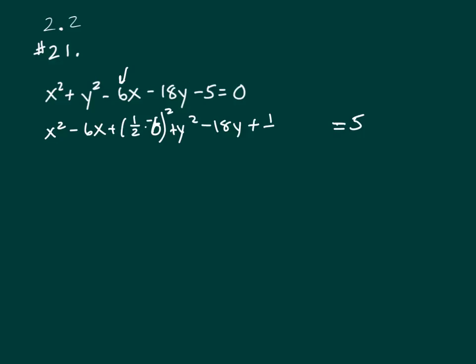So plus one half times B which is negative 18 squared. And by the way, you can't complete the square unless the leading coefficient has to be a 1 on the X squared and the Y squared. So let's figure this out.